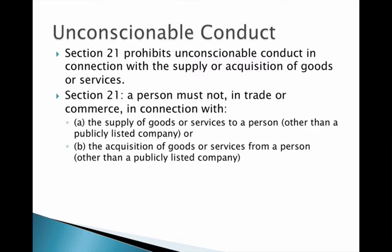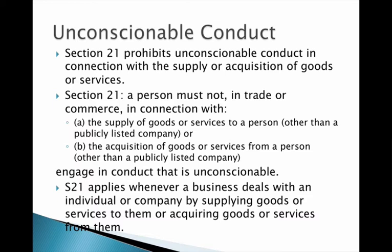While section 20 deals with unconscionability generally, section 21 deals with the supply or acquisition of goods or services. It exempts publicly listed companies, so what this really has the effect of is governing those situations where an individual or company is dealing with another individual or small business during negotiations and during the deals. So as well as the general prohibition under section 20, we have section 21 applying whenever we have business deals to worry about.